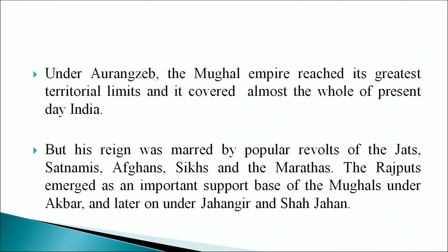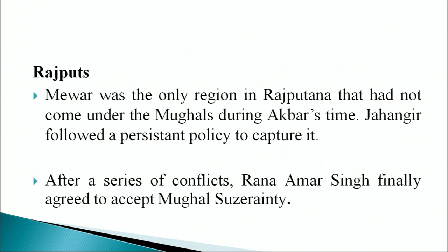Let us look at the challenges to Mughal rule. During Aurangzeb's reign the Mughal Empire reached its greatest territorial limits and covered almost the whole of present-day India. But his reign was marred by popular revolts of the Jats, Satnamis, Afghans, Sikhs and the Marathas. The Rajputs emerged as an important support base of the Mughals under Akbar and later under Jahangir and Shah Jahan as well. Mewar was the only region in Rajputana that had not come under the Mughals during Akbar's time. Jahangir followed a persistent policy to capture it; after a series of conflicts Rana Amar Singh finally agreed to accept Mughal suzerainty. During the reigns of Jahangir and Shah Jahan, the Rajputs generally continued to be friendly with the Mughals and held very high mansabs.